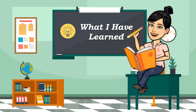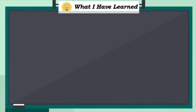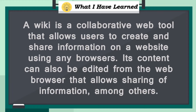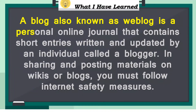What I Have Learned: A wiki is a collaborative web tool that allows users to create and share information on a website using any browser. Its content can also be edited from the web browser, allowing sharing of information among others. A blog, also known as weblog, is a personal online journal that contains short entries written and updated by an individual called a blogger. In sharing and posting materials on wikis or blogs, you must follow internet safety measures.